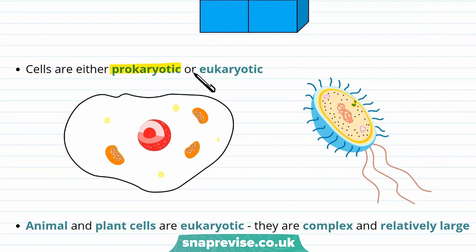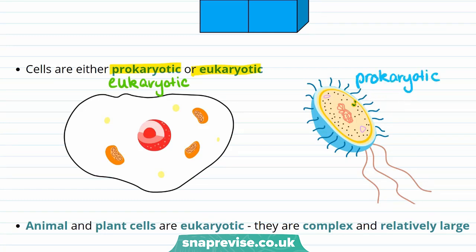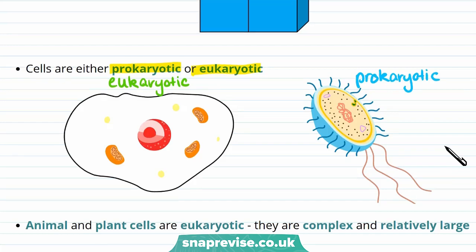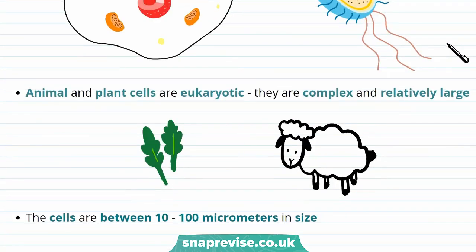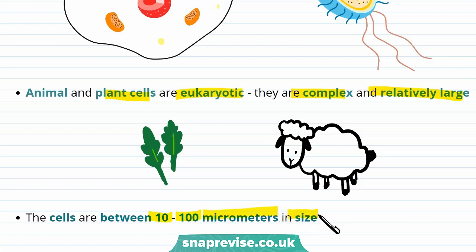Cells can either be prokaryotic or eukaryotic. This is an example of a eukaryotic cell, and this is an example of a prokaryotic cell. Animal and plant cells are eukaryotic — they're complex and relatively large. So the cells in us are eukaryotic, and they're bigger than prokaryotic cells, as they're between 10 and 100 micrometers in size.